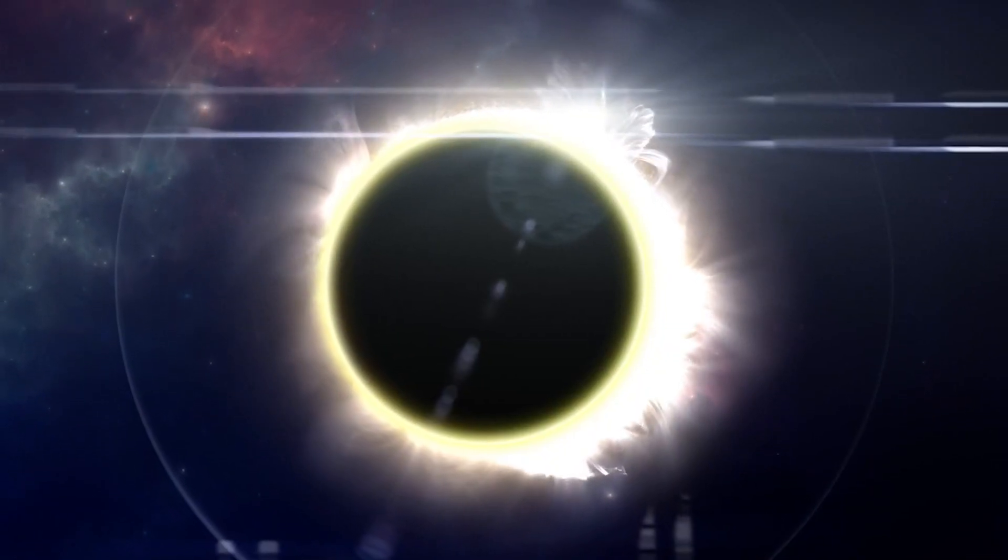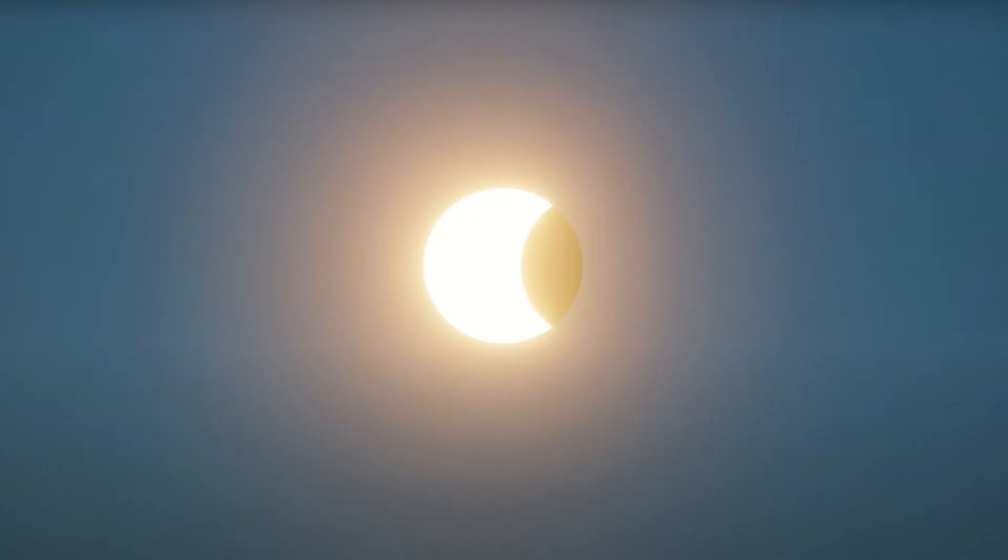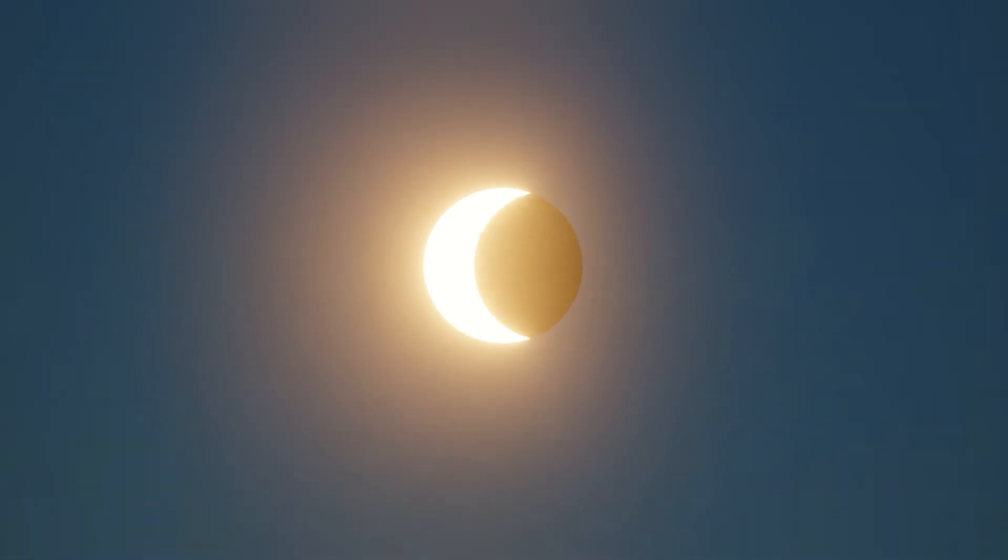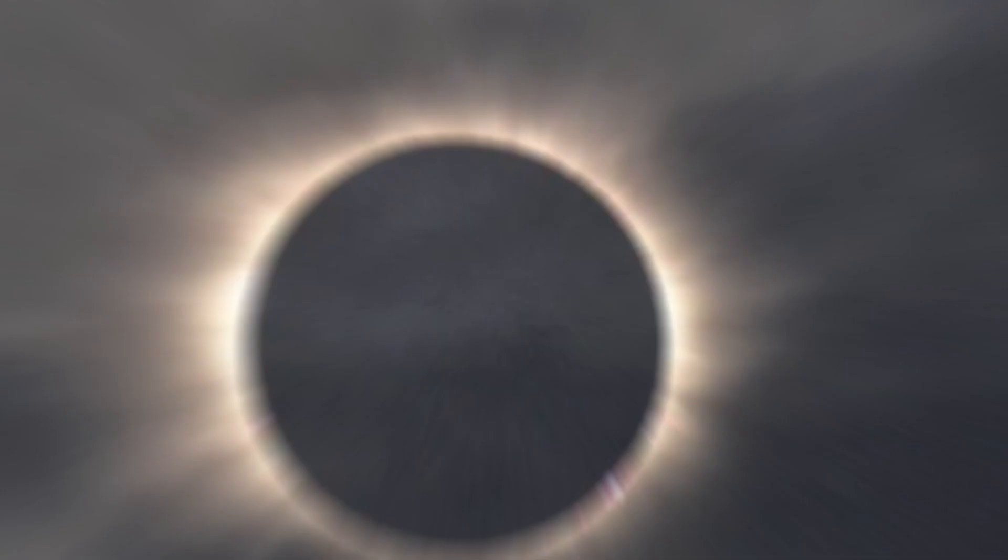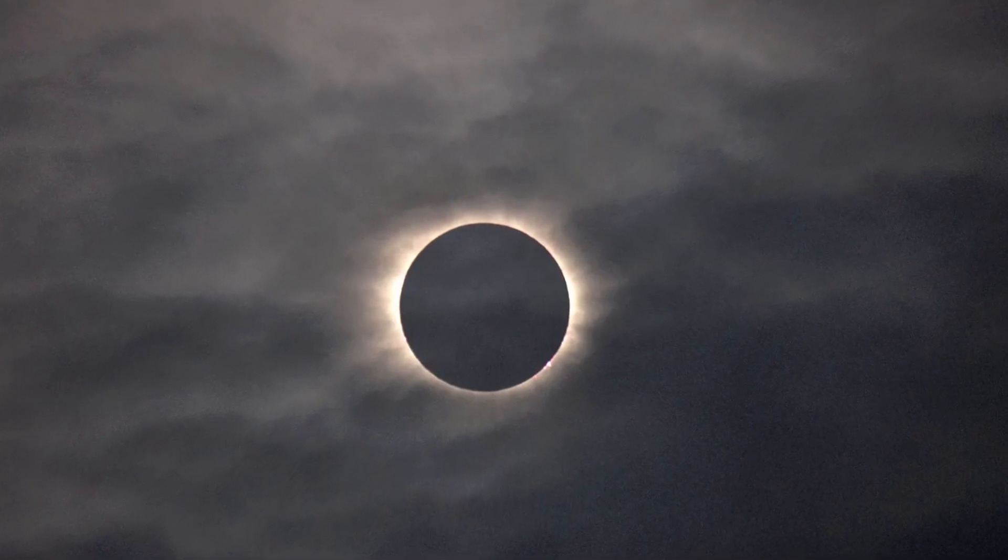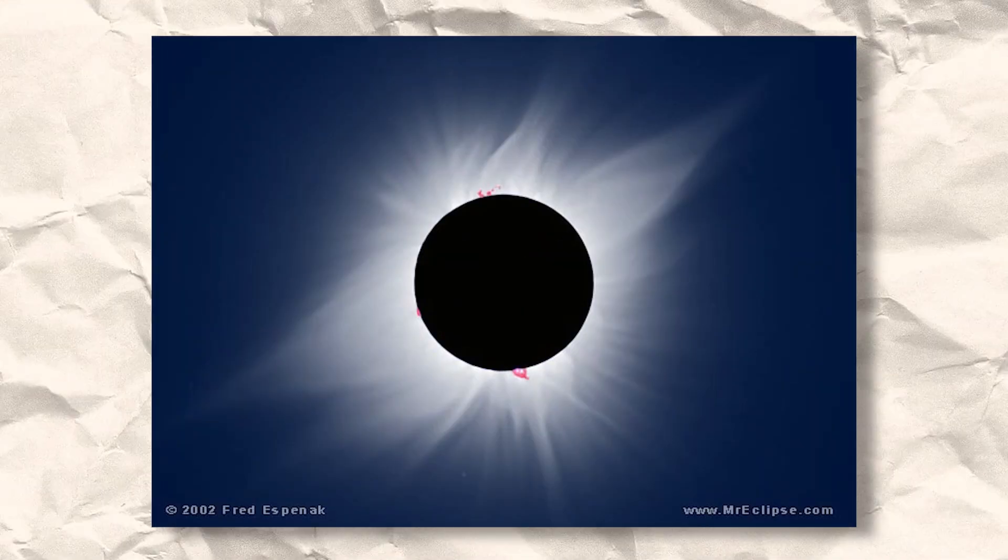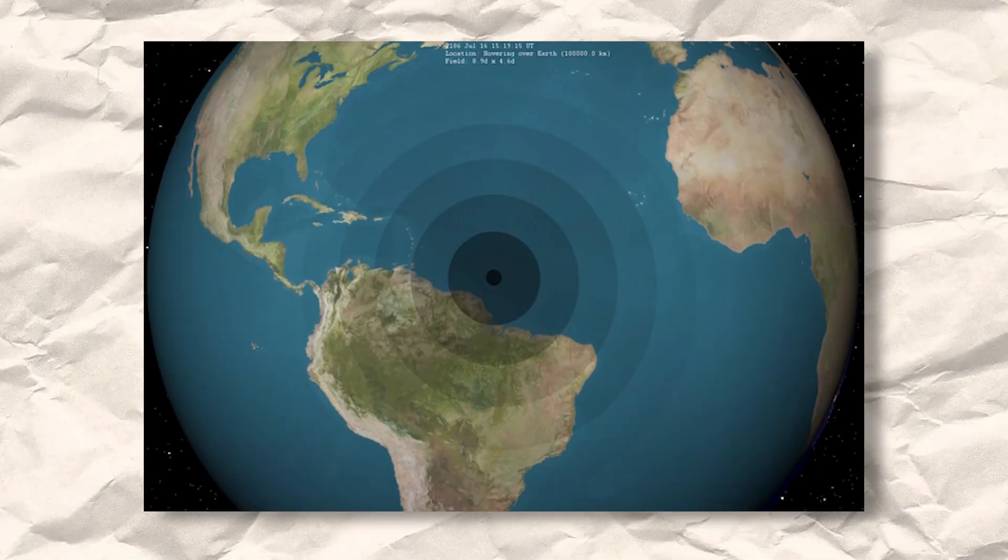The longest total solar eclipse of this century is scheduled for August 2, 2027, offering a remarkable spectacle for those fortunate enough to be in its path. Unlike a longer eclipse in 2009 that mostly occurred over the ocean, the 2027 eclipse will be the longest on land since 1991 and until 2186.